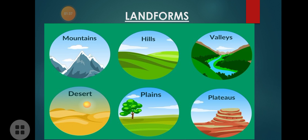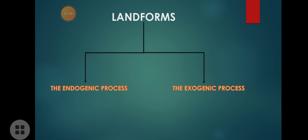Landforms are brought into change by two important processes. One is called the endogenic process and the other is called the exogenic process. Endogenic — the name itself gives us information. 'Endo' means inside, from within. The surface of the earth is disturbed, tilted, or changed by forces from inside the earth.